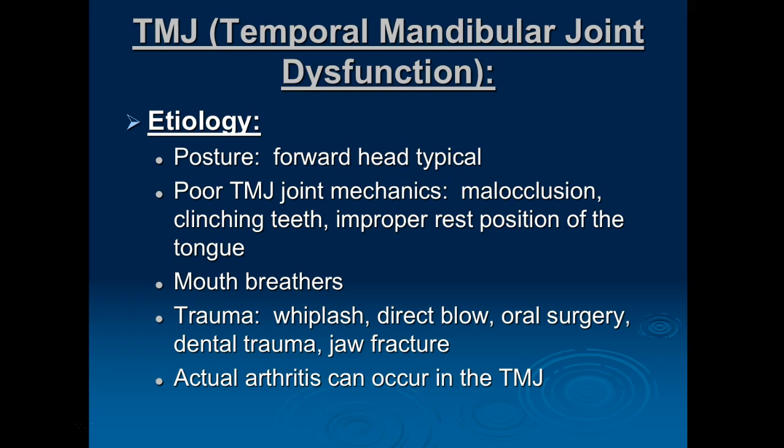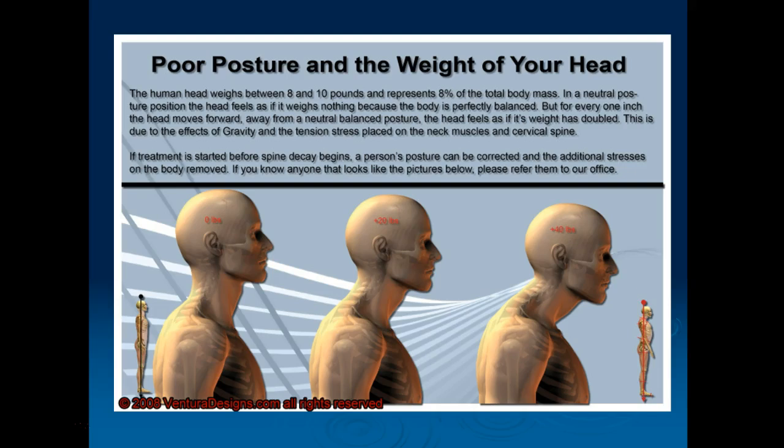TMJ can also start from some kind of trauma — getting punched in the face, whiplash, significant oral surgeries, or dental trauma such as fracturing the jaw. You might also have patients diagnosed with arthritis in the TMJ — it's a joint that can be affected by arthritis just like other joints in the body, bringing on the same kind of symptoms.